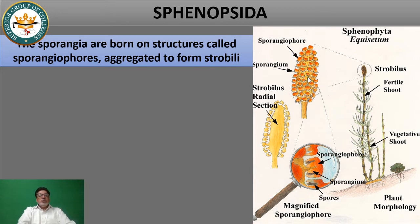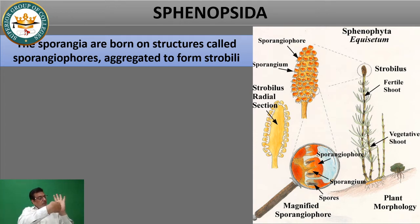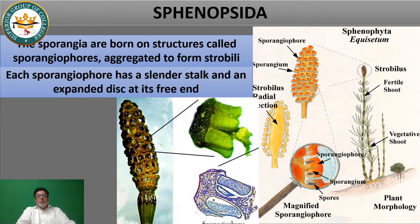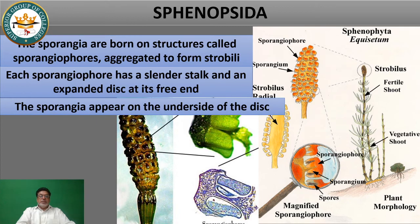On the strobilus, there are sporangiophores present. This is a sporangiophore. Here you can see the sporangiophore clearly. This is the main axis, and this is a sporangiophore. The leaf forms the arc. On the underside of the surface there are sporangia. The sporangiophore bears a disc which is expanded on the underside, providing more protection to the sporangia.